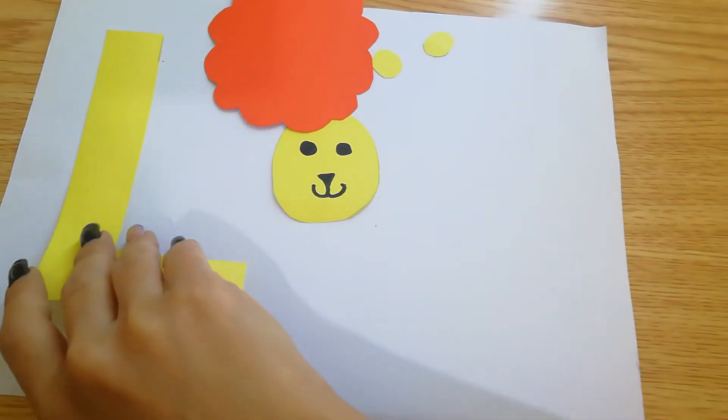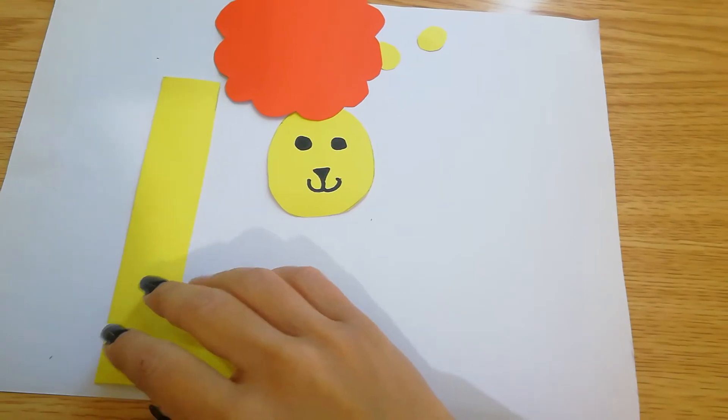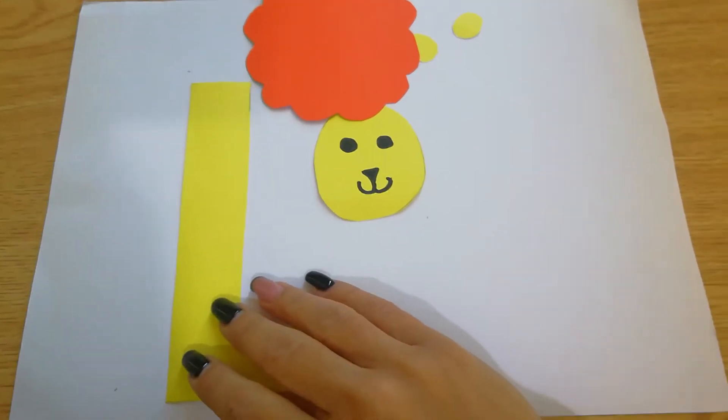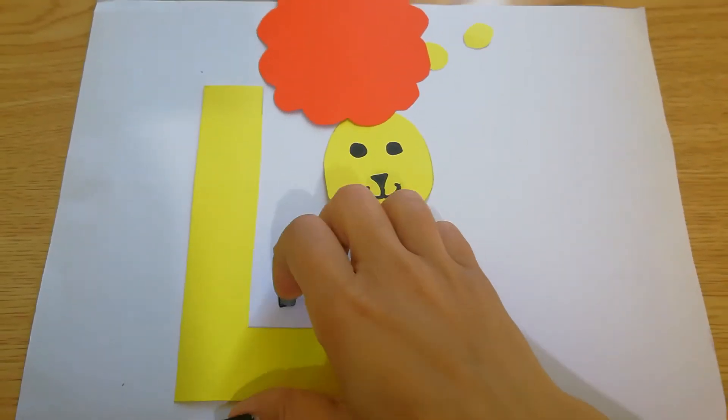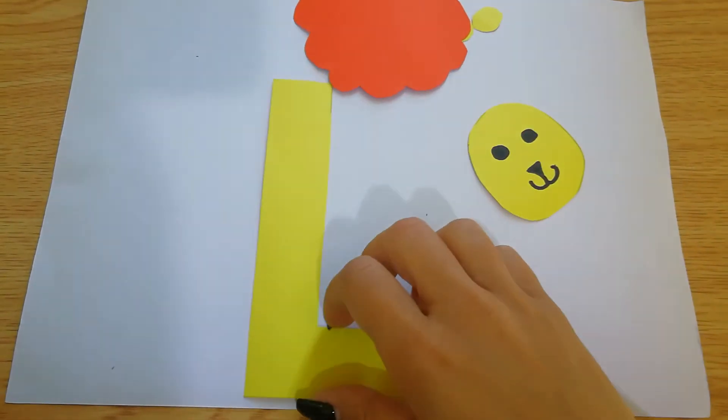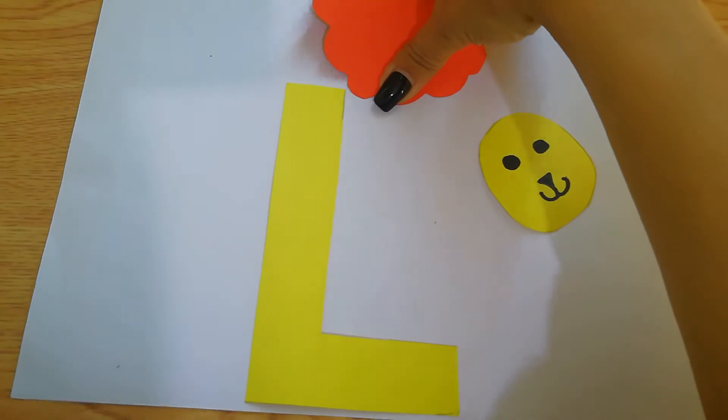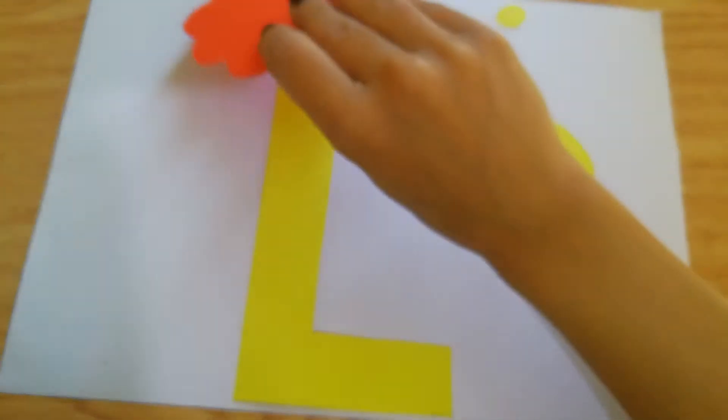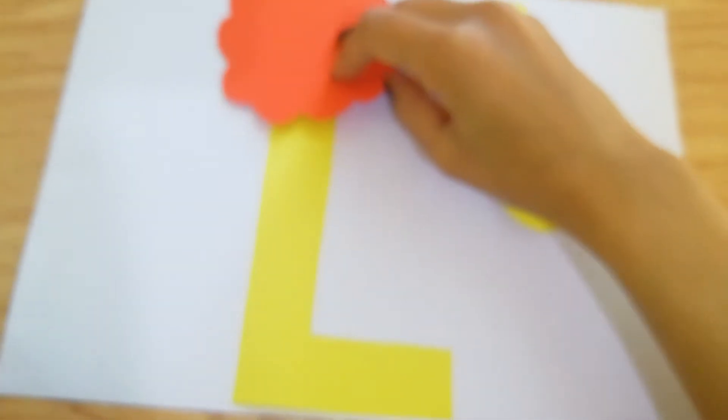So, we are going to make a lion. First, we're going to place the L to represent the body of the lion, like this. Then, we will do this one for the head of the lion.